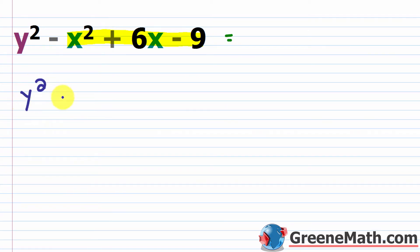So I'm going to have my y squared. I'm going to put my minus here. And then I'm going to open up some parentheses, and inside here all of these signs are going to change, because I'm factoring out a negative. So instead of minus x squared, I'm just going to have x squared. Instead of plus 6x, I'm going to have minus 6x. Instead of minus 9, I'm going to have plus 9.